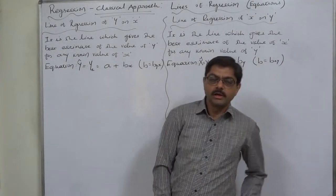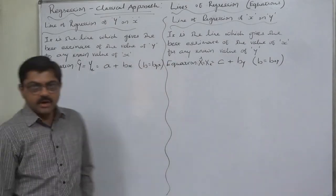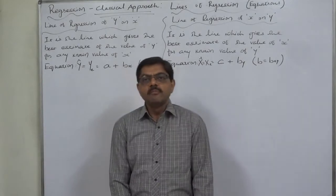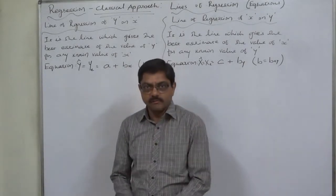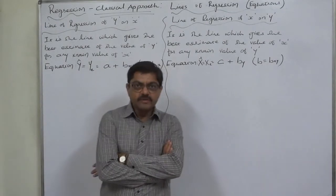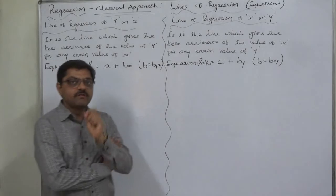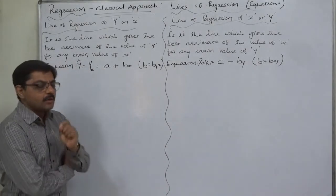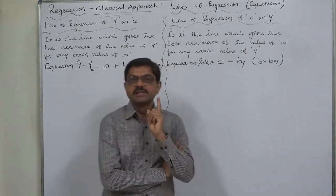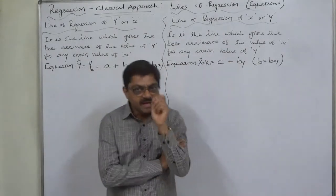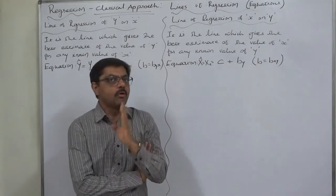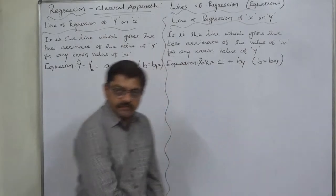Hello and welcome. Today we discuss linear regression using the classical approach, specifically the lines of regression or equations of lines of regression. The line of regression is the line which gives the best estimate of the value of a dependent variable for any known value of the independent variable.